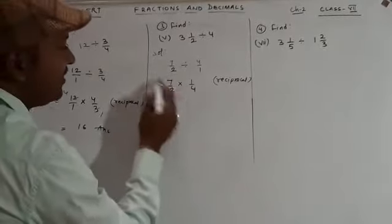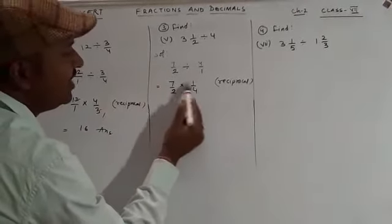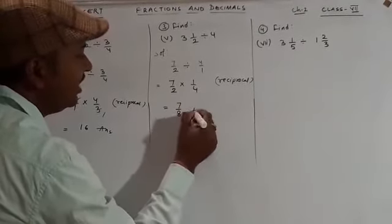Now if anything is canceling, cancel it. Nothing else to cancel. Multiply numerator with numerator: 7 times 1 equals 7. Denominator: 2 times 4 equals 8. Answer is 7/8.